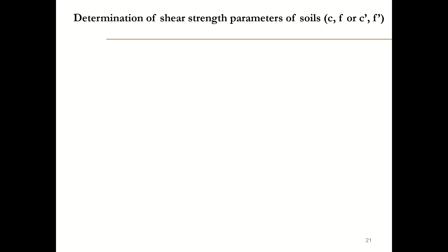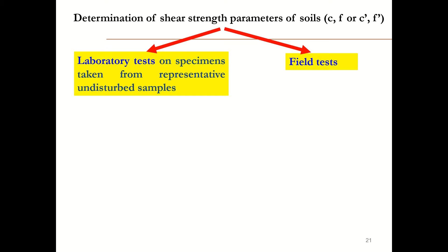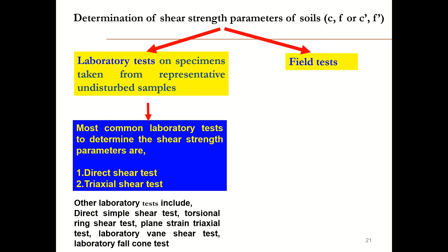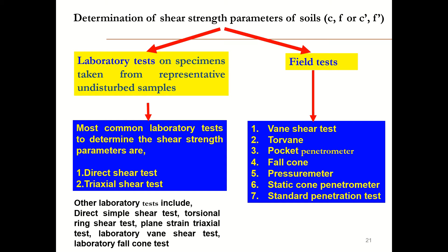That is the procedure for the direct shear test. There are other laboratory tests to determine shear strength parameters, such as the direct shear test, triaxial test, torsional ring shear test, plain strain triaxial test, laboratory vane shear test, and laboratory fall cone test. There are also field test methods such as the vane shear test, torvane, pocket penetrometer, fall cone, pressuremeter, static cone penetrometer, and standard penetration test. Depending on our expected test results and the existing soil conditions, we choose which test to conduct.